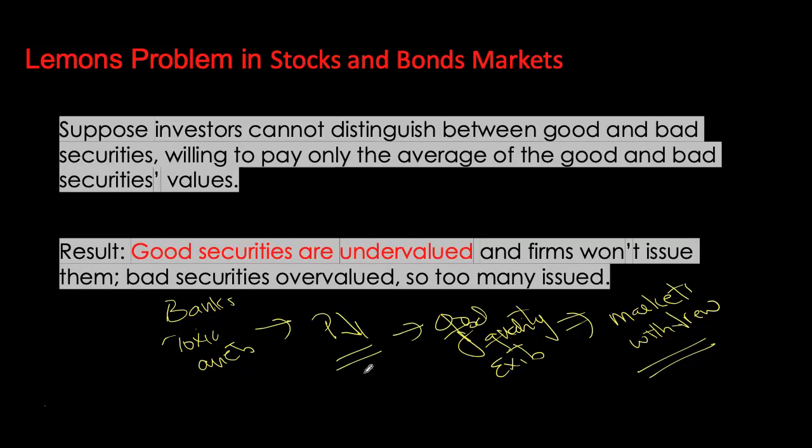We see the problem of adverse selection prevalent in all securities markets. Investors, not wanting to end up with bad securities, do not participate in securities markets as much as we would like. So securities markets don't function very well. This problem of adverse selection in securities markets also explains why stocks and bonds are not a big source of external financing and account for a very small portion of external financing by businesses, as we saw earlier in our bar graph.